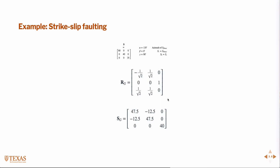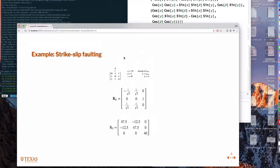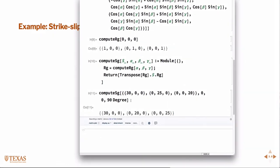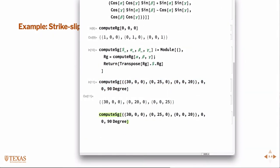Strike slip faulting. So let's go ahead and work this example too. So here we have 60, 40, 35 is our stress field. Is SG in which way? That's the stress in the geographic frame.